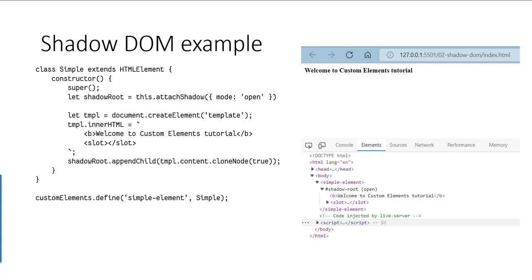Here is an example for creating a Shadow DOM. When defining the custom element, we create the Shadow DOM using attachShadow() with mode set to open. Then you can define other elements — paragraphs, lists, tables — and attach those child elements to the shadow root. When you render this custom component, as visible in the browser console, it creates a shadow root that encapsulates the contents of your custom element.